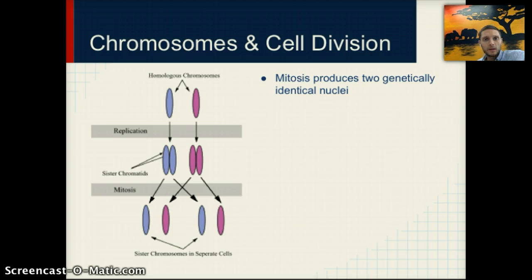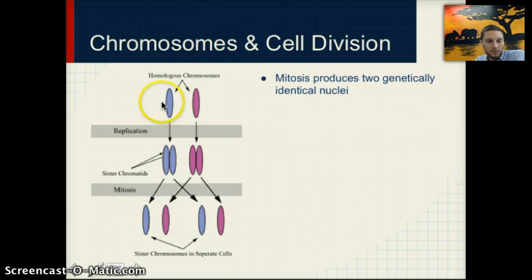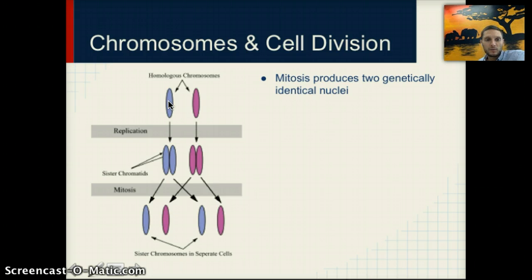Before mitosis can occur, the DNA has to be replicated. This actually occurs not during mitosis, but during interphase. In our diagram we have homologous chromosomes — chromosomes that are the same number. In humans we have 23 pairs of chromosomes, and chromosome numbers differ between different species. A higher number of chromosomes doesn't necessarily indicate that the species is more complex.